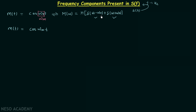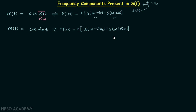Now we replace ω₀ with ωM. So we write the Fourier transform M(ω) equal to π multiplied by δ(ω − ωM) plus δ(ω + ωM). The first impulse will be present at ω = +ωM and the second impulse will be present at ω = −ωM. The waveform has two impulses present in the Fourier transform.